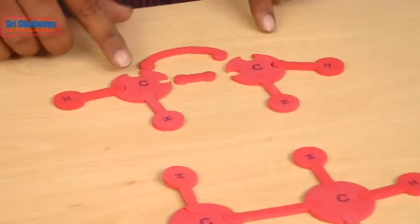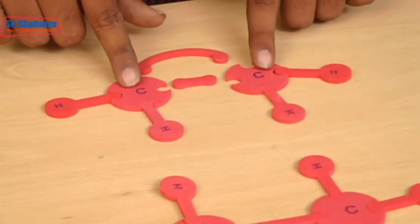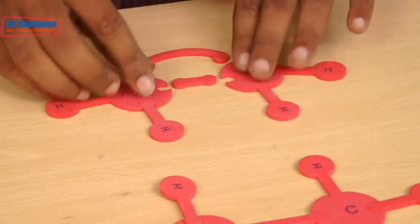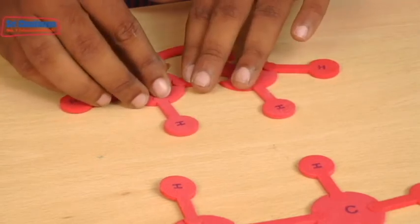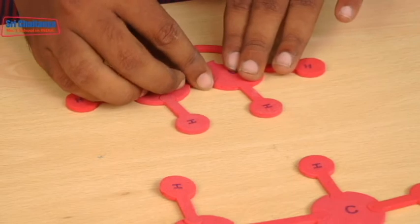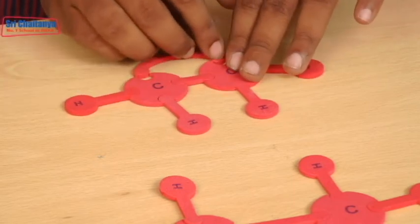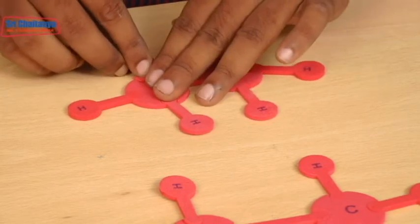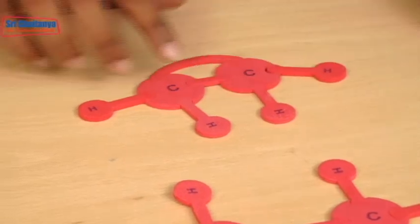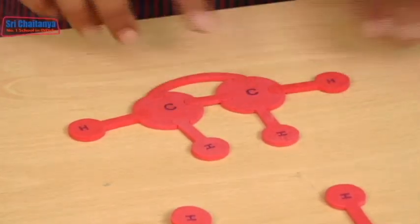Next one, we are going to discuss about C2H4. In that between carbon atoms, one sigma bond and one pi bond is present. Each carbon atom is attached with 2 hydrogen atoms.